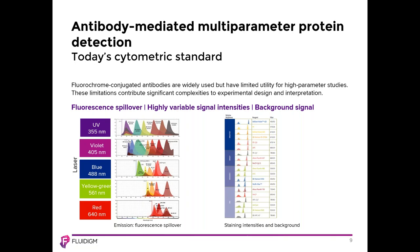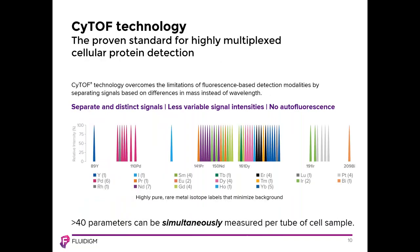Helios uses proven CyTOF technology — cytometry by time of flight — that surpasses the inherent limitations of fluorescent-based detection by using highly pure metal tags that are separated by mass instead of by wavelength. Metal tags have distinct signals which can be separated with one Dalton resolution, as well as less variable probe intensities. Nothing analogous to autofluorescence exists when using CyTOF technology, since the metals used as probes don't exist naturally in biological systems. These characteristics of metal tags provide a solution to the current challenges in high-parameter flow cytometry.